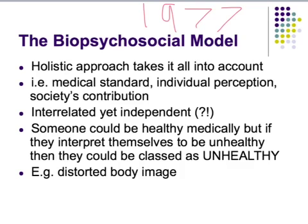An example might be someone with a distorted body image — someone who is healthy but when they look in the mirror sees themselves as overweight, and because of that perception sees themselves as unhealthy. There's also controversy around overweight role models sometimes seen in the media: if they class themselves as healthy, according to this model they would be healthy. However, according to the biomedical model, they wouldn't be, because they are physically overweight.